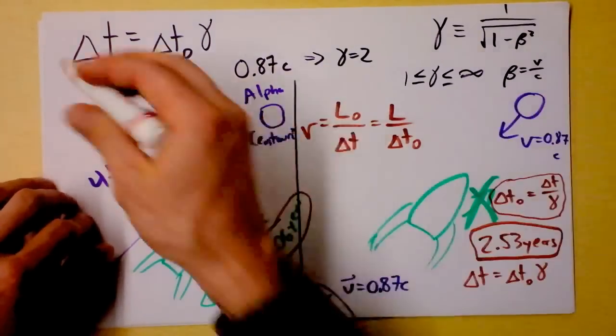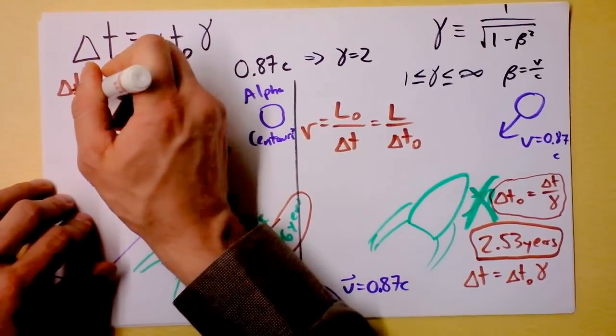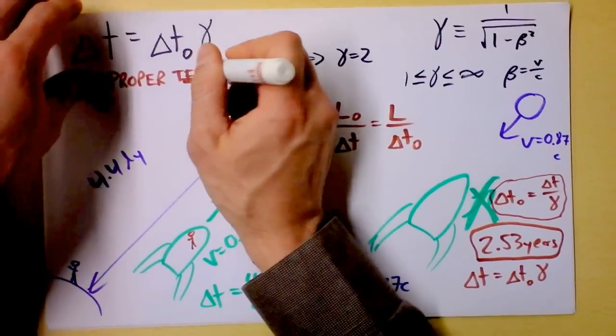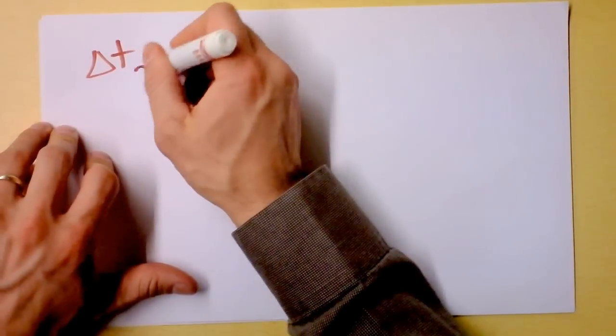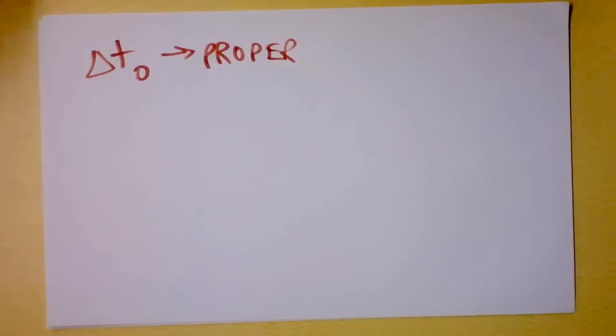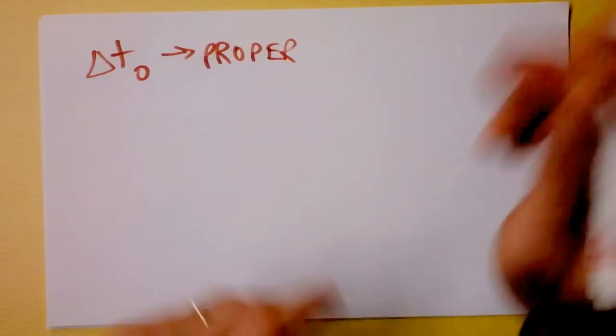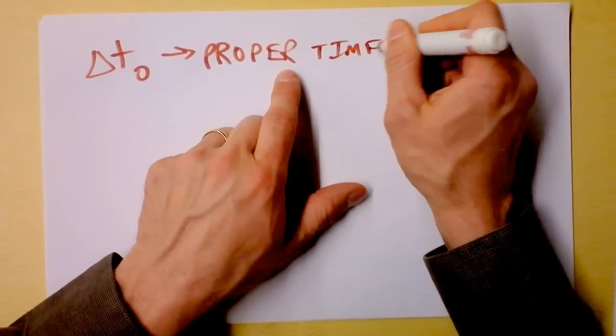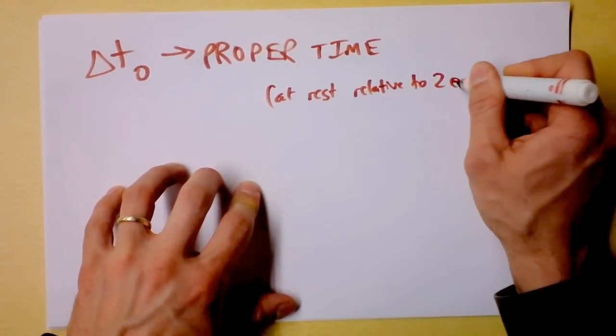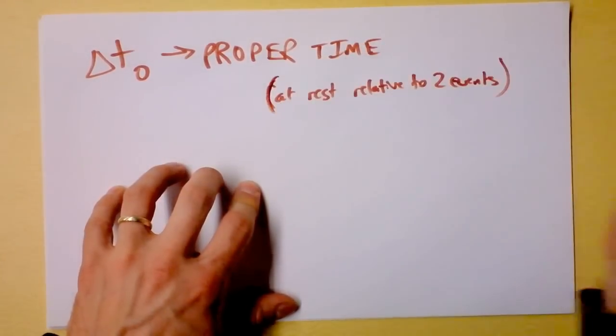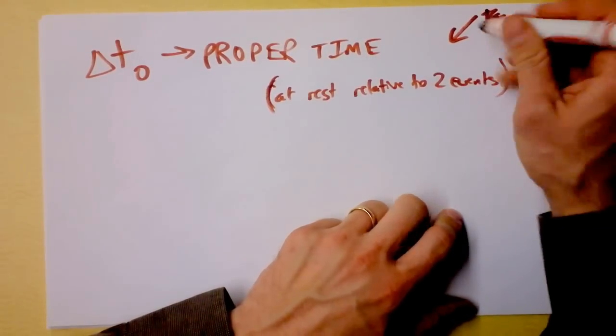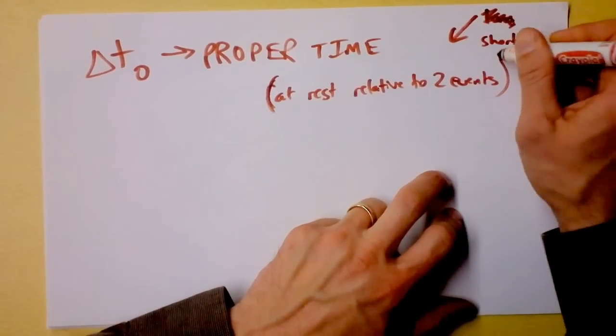Now, let's talk a little bit about what delta T naught means. Delta T naught is the proper time. And proper time, I should make this its own slide. Proper time, delta T naught. Proper time. And it's the time measured by someone who is at rest relative to the two events. At rest relative to two events. That's what proper time is. The other thing that we can know about proper time is it's also the shortest possible time.